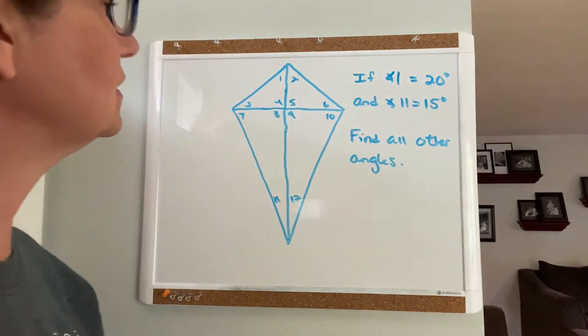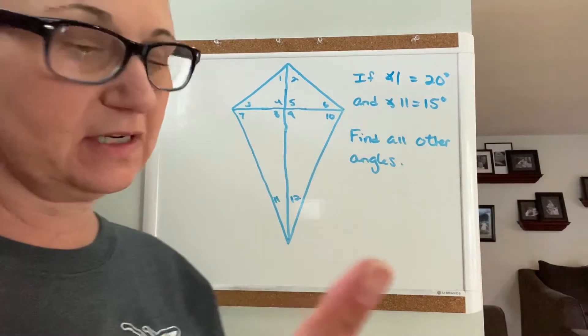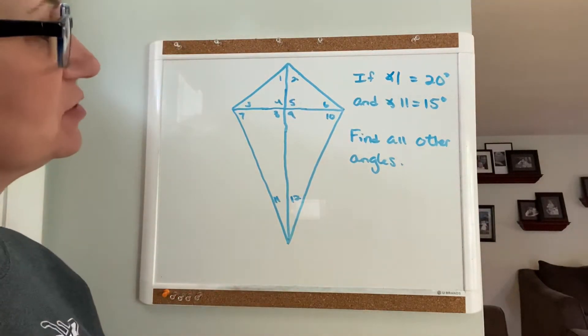Okay, math 10. This is the third example for your trapezoids and kites.